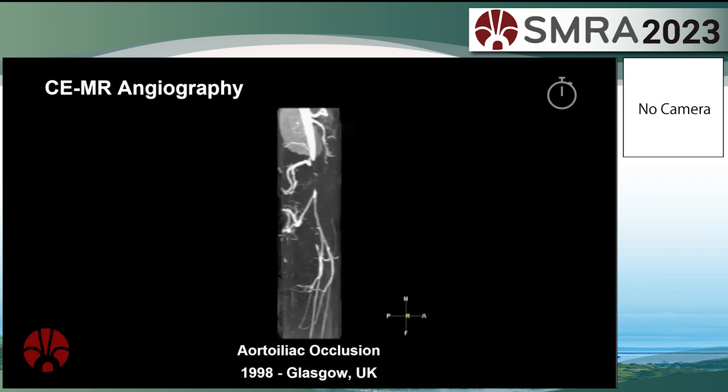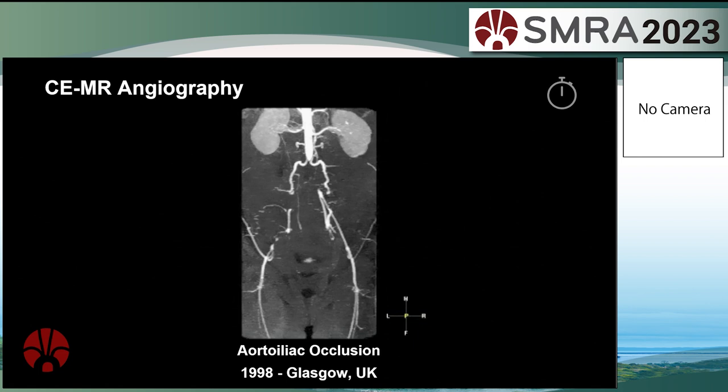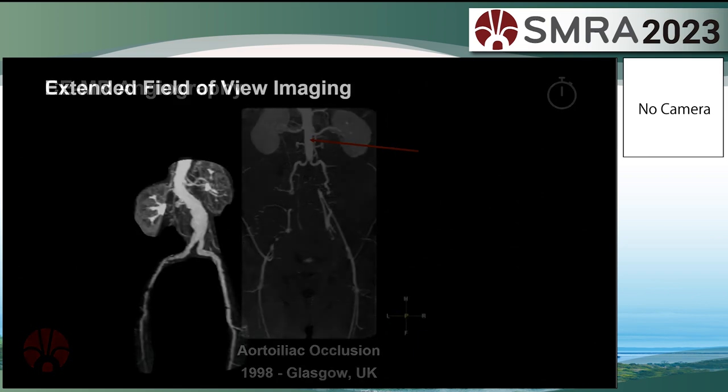Personally, contrast-enhanced MRA was a real breakthrough when we first got a scanner that could do this in 1998. Until then, we couldn't image certain patients in any other way than by doing a translumbar aortogram — putting a large needle into the patient from the back and injecting contrast above the occlusion to show the surgeon where they might plumb in their grafts. We didn't have CT angiography at this time, so there was no competitor to contrast-enhanced MRA. It was a truly revolutionary technology.